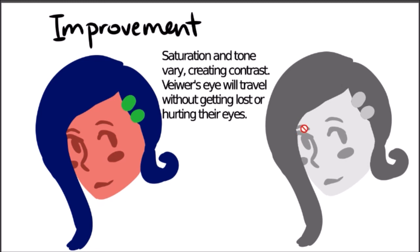So the face is light and the hair pins are in a bit of an in-between, and then the hair is a lot darker. And that is how you can use saturation, tone, tints, and shades and vary them to create contrast.